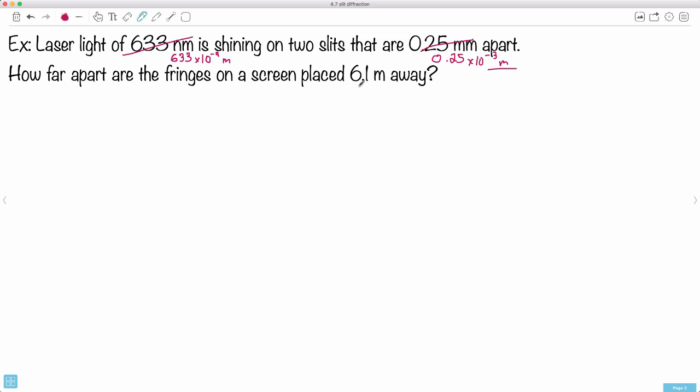We can put everything in meters. This is in meters so that one's okay. Now maybe it helps to start writing out what letters are what. Because we have fringes, light, and slits—more than one slit—we're going to be using that equation s equals λD over d.